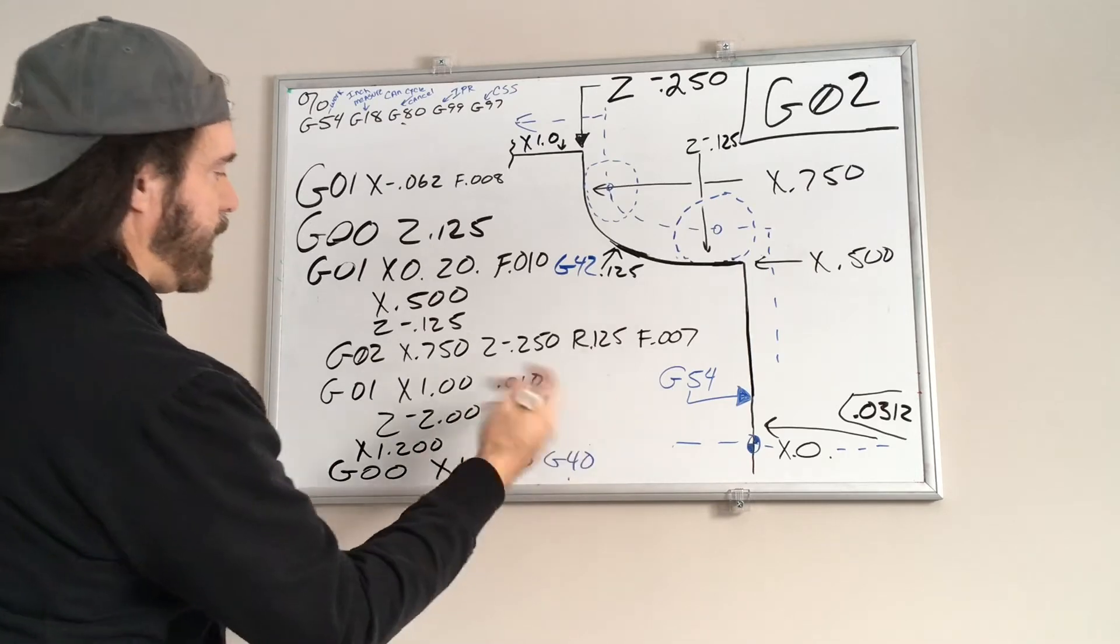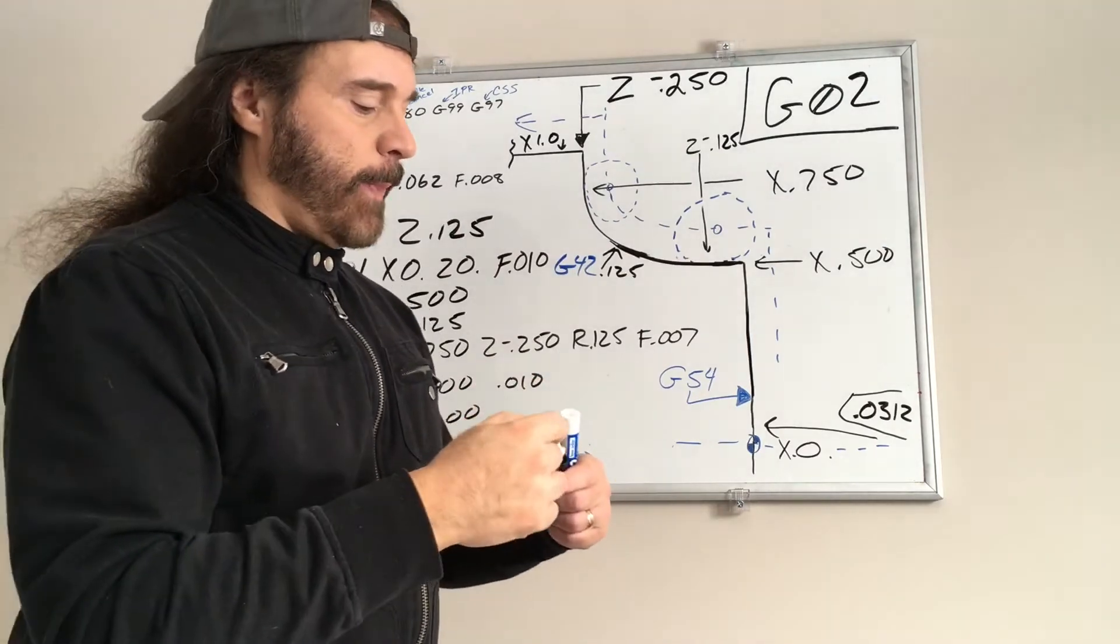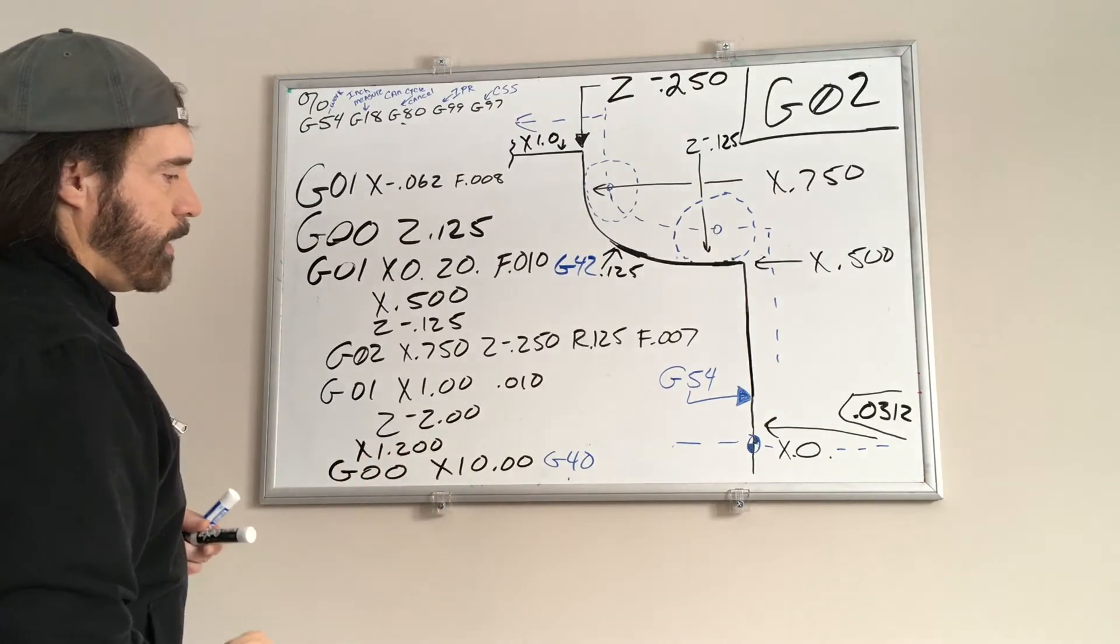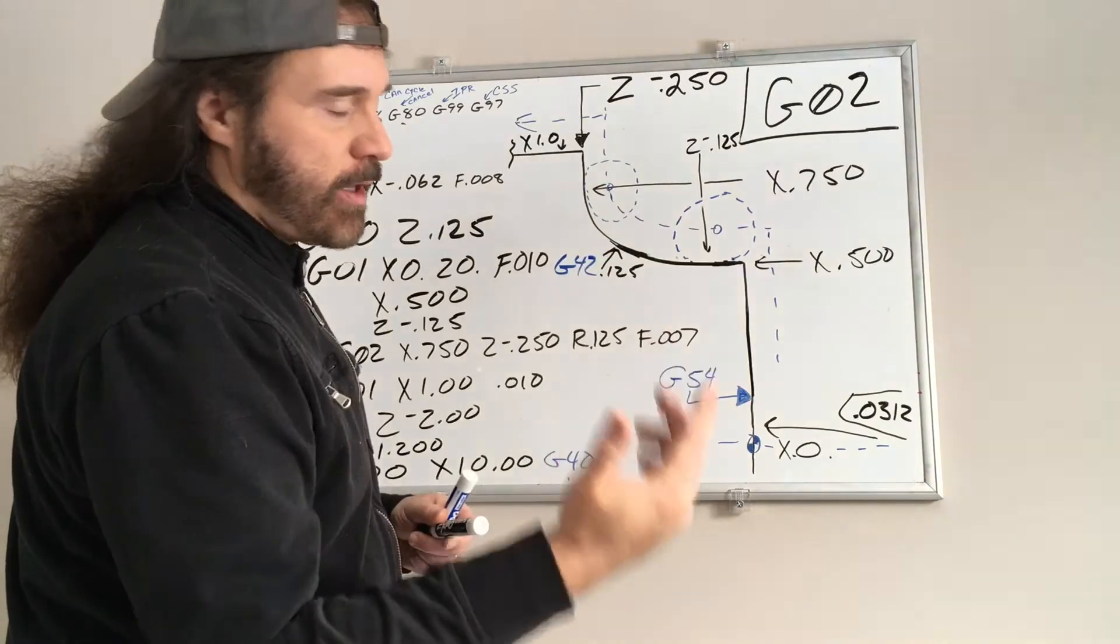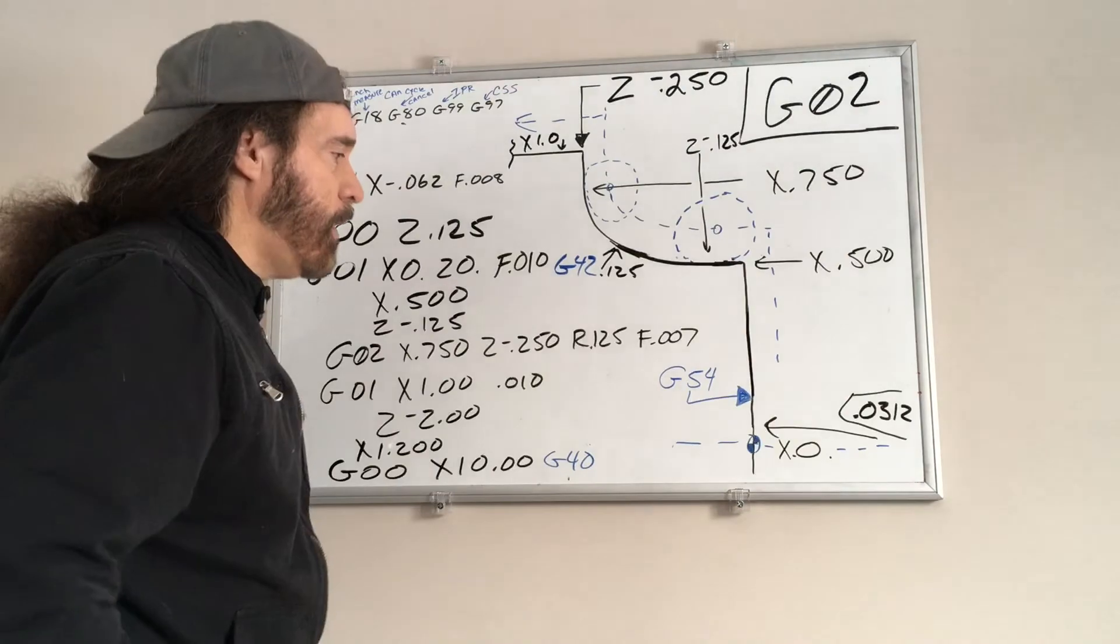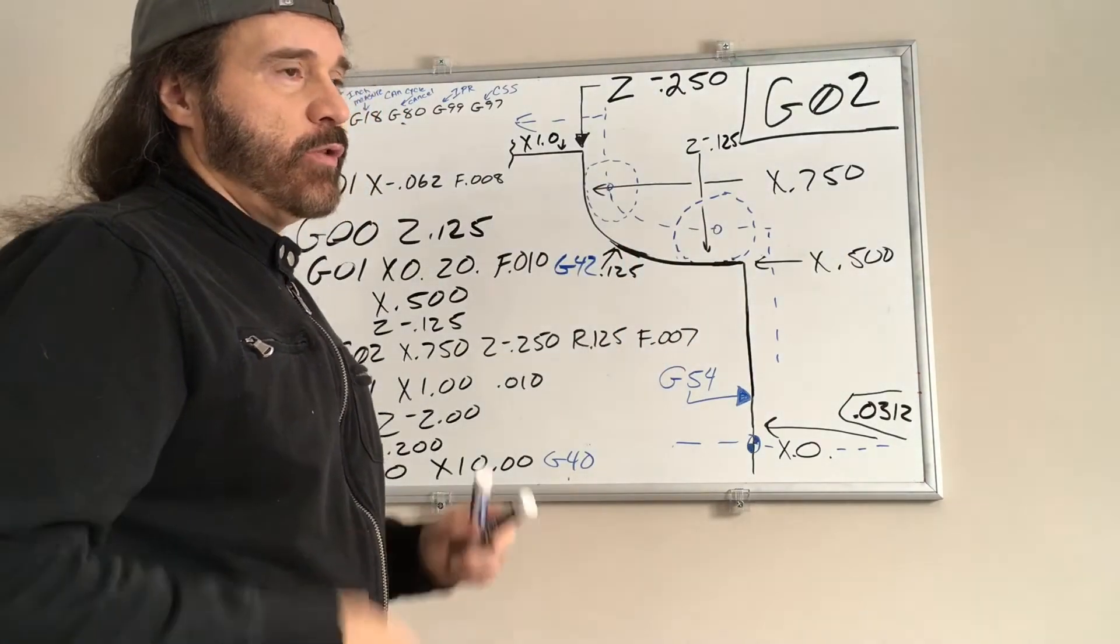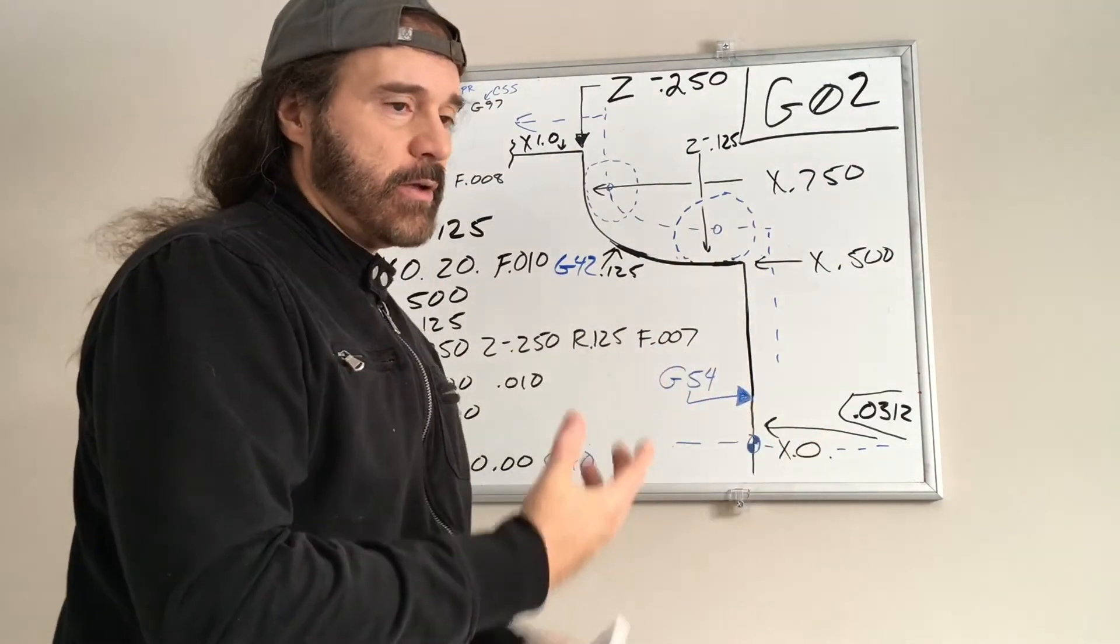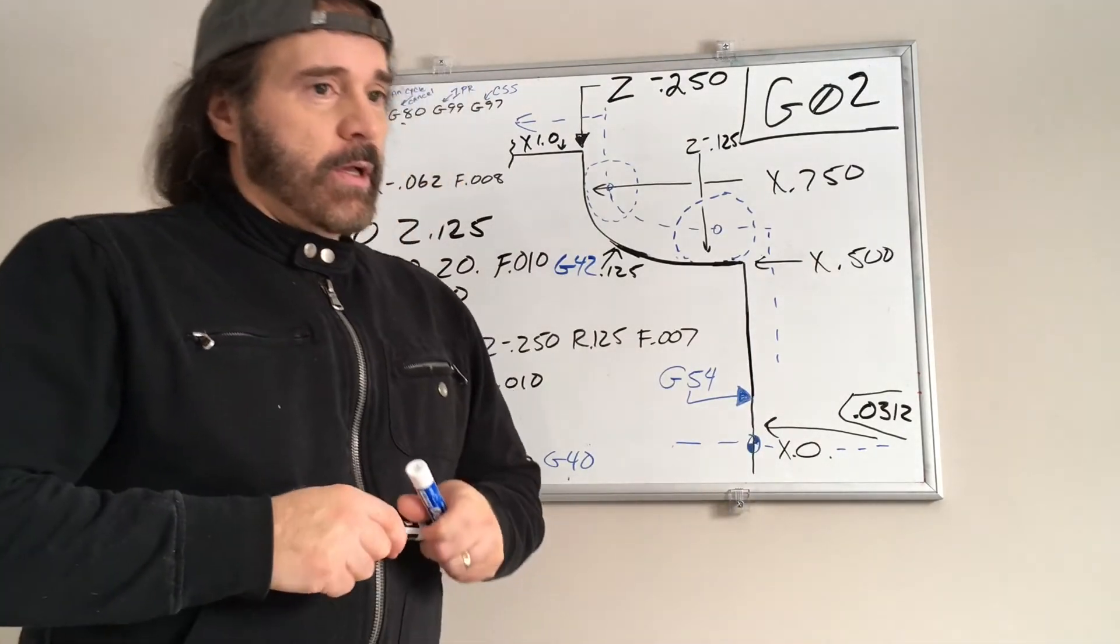Then we'll carry that out. The part was an inch and one-eighth in diameter, so we'll feed up to X1.20, and then we'll rapid out. We'll go to a dimension of ten inches from spindle centerline, and then we'll cancel cutter comp. And that's cutter comp—it did all the work for you as far as the radius because it automatically knows how much to deduct.